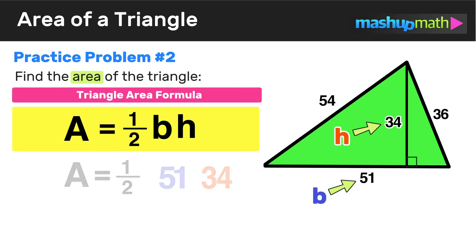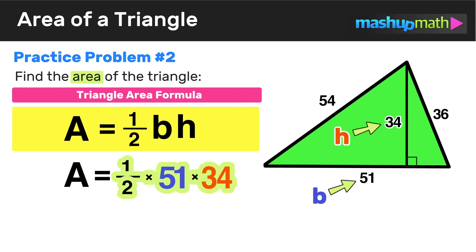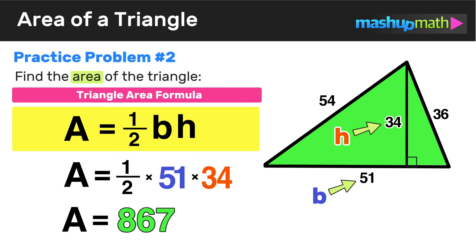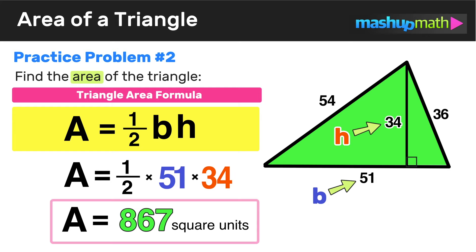Since we know B equals 51 and H equals 34, we plug them into the area formula: area equals one half times 51 times 34. That product is equal to 867. So the area of this triangle is 867 square units.